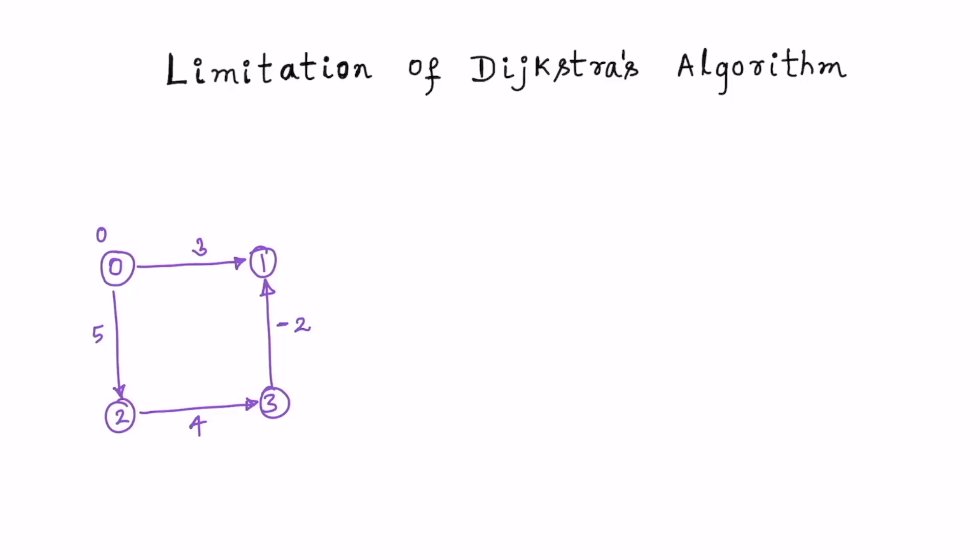Dijkstra's algorithm is used to find the shortest distance from a source node to all the other nodes in the graph. A limitation of Dijkstra's algorithm is it may or may not work when there is a negative edge in the graph, like this edge.